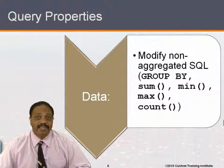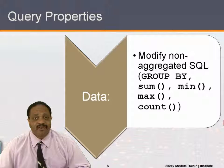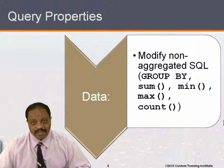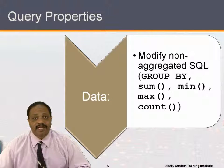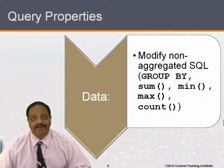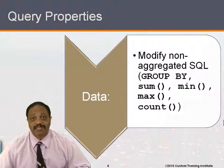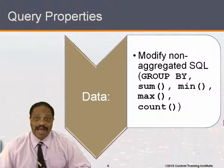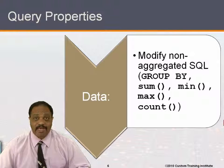As far as the data itself, you can modify any non-aggregated SQL. Aggregated SQL is grouped-by SQL, SQL that has a sum function, a min function, a max function, or a count function. This is known as aggregated SQL because it takes multiple rows of data and squeezes them down to a single value. In the data property, we can modify non-aggregated SQL — in other words, SQL that doesn't fall into one of those categories.